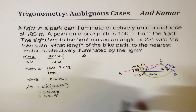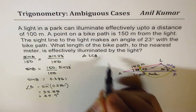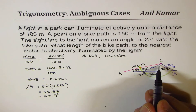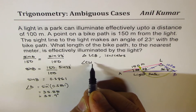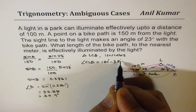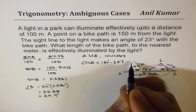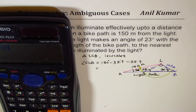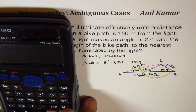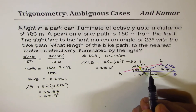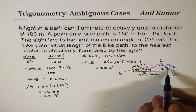Since triangle LCB is isosceles — these two sides are both 100 — we can find angle CLB. Angle CLB equals 180 degrees minus 35.9 minus 35.9, because it's an isosceles triangle so both base angles are 35.9. So we get 180 minus 35.9 minus 35.9 equals 108.2 degrees. And since it's an isosceles triangle, the other base angle is also 35.9 degrees.